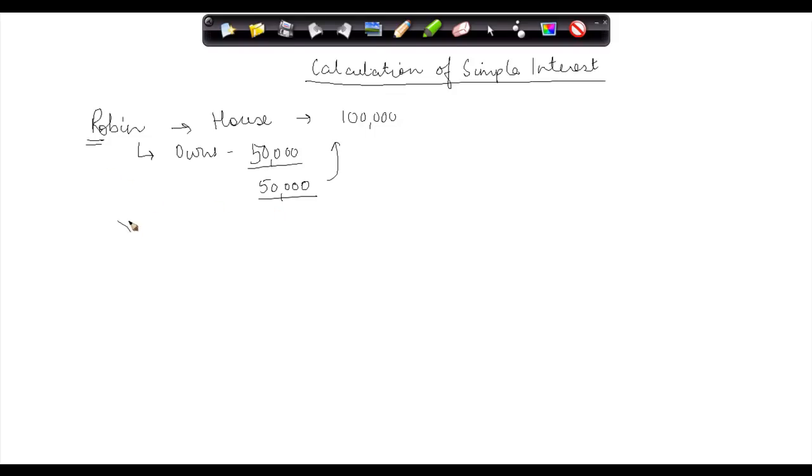Robin decided that there is a bank, XYZ bank, in the nearby locality and the bank is ready to lend him this 50,000 bucks. So Robin went to the bank and asked them to give him this money, which is called lending.